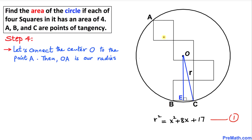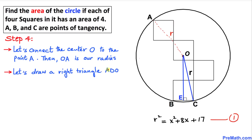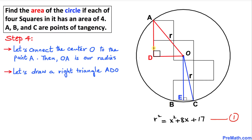In the next step, let's focus again on the figure. Let's connect the center O with point A — this is also our radius r. Now let's draw a right triangle ADO, dropping a perpendicular at point D. This gives us right triangle ADO.